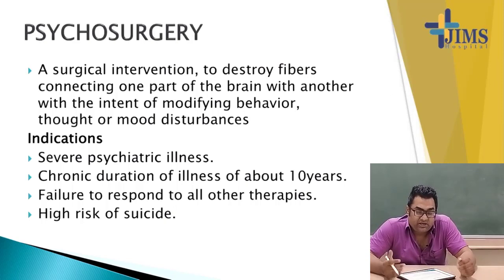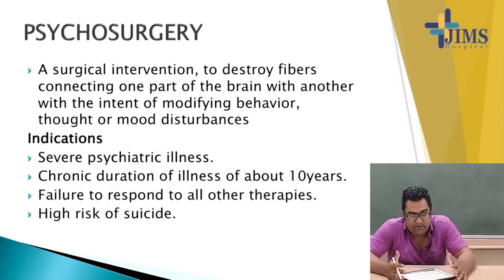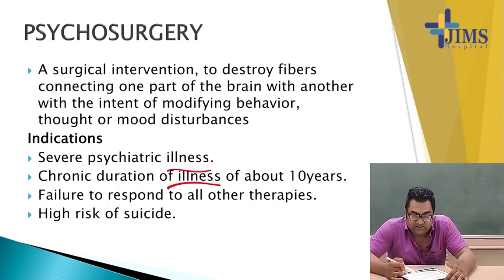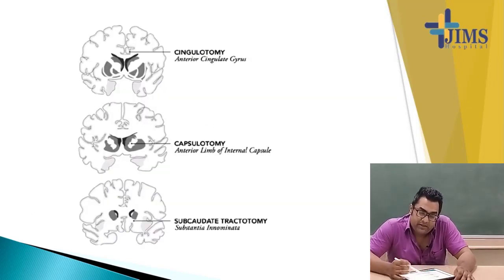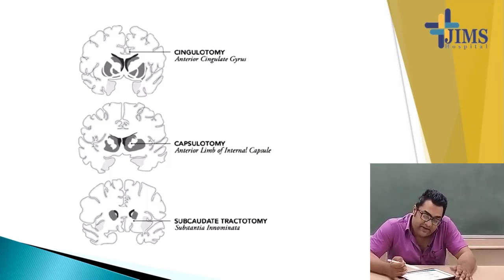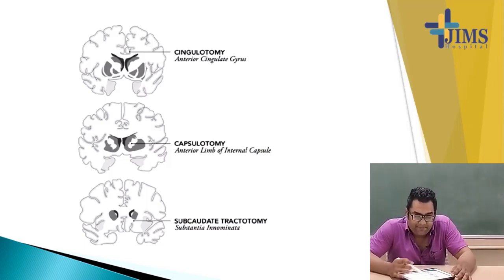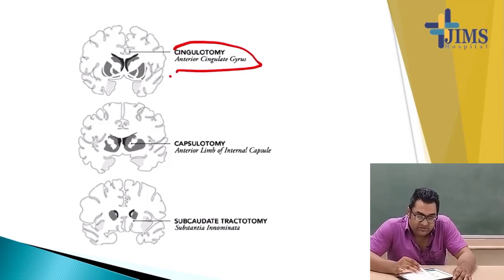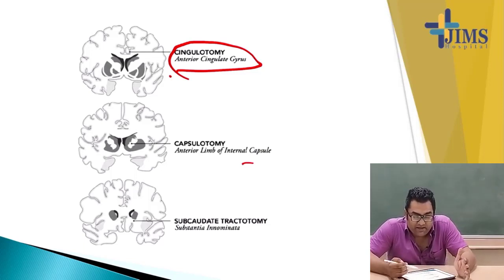Psychosurgery is a surgical intervention to destroy fibers connecting one part of the brain with another, with the intent of modifying behavior, thought, or mood disturbances. Indications are severe psychotic illnesses with chronic duration of about 10 years, failure to respond to all other therapies, and high risk of suicide. Types include cingulotomy, capsulotomy, and subcaudate tractotomy. In cingulotomy the cingulate gyrus is removed; in capsulotomy the anterior limb of the internal capsule is targeted; in subcaudate tractotomy the substantia innominata is targeted. This is very rarely done in India.